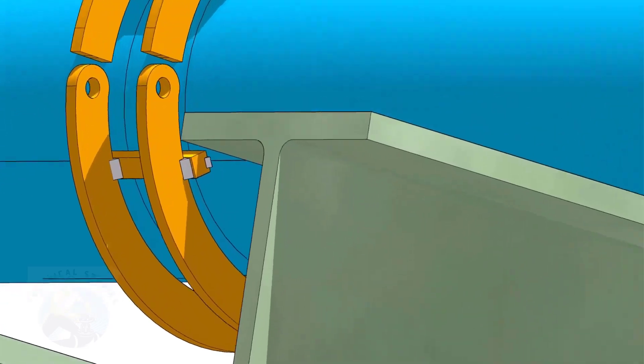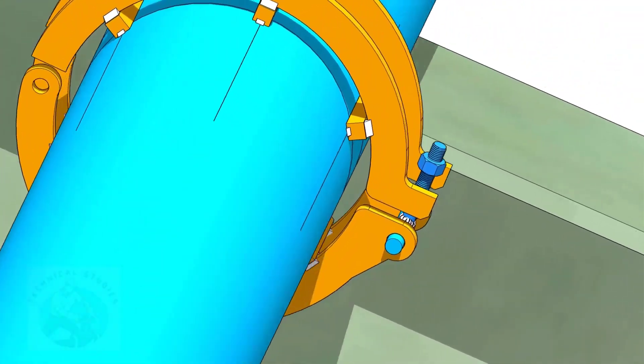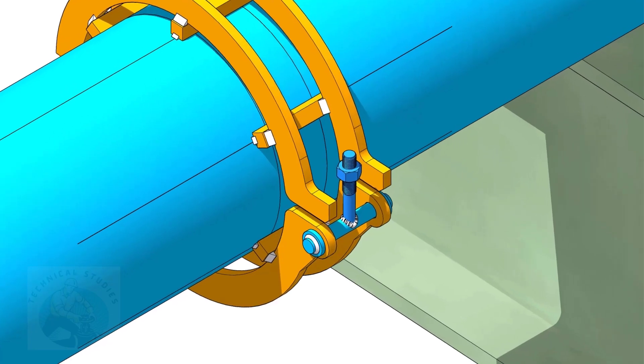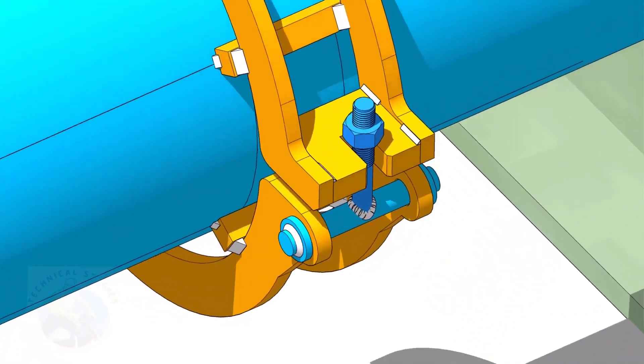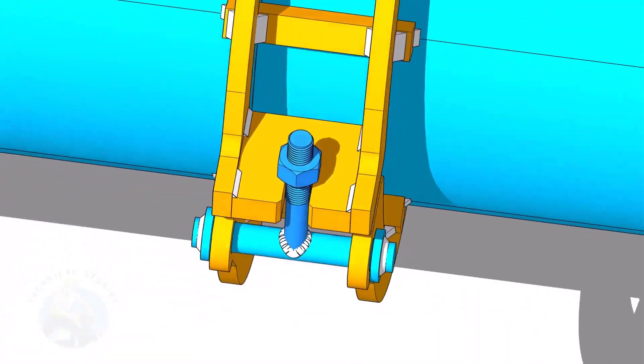First, put the bolt and the hinge plates, and tack weld the hinge plates with the top rings. Tack weld the slotted plate with the top rings as shown.